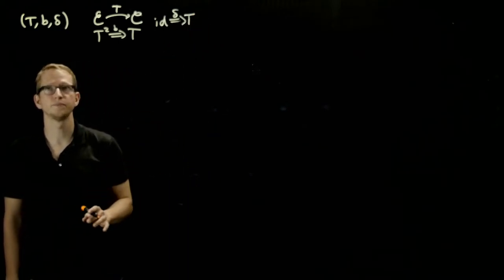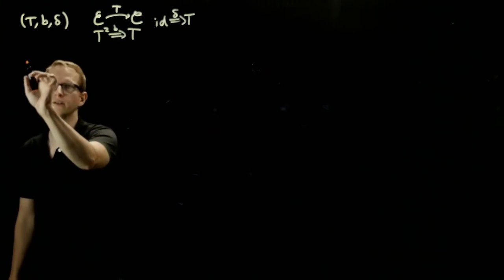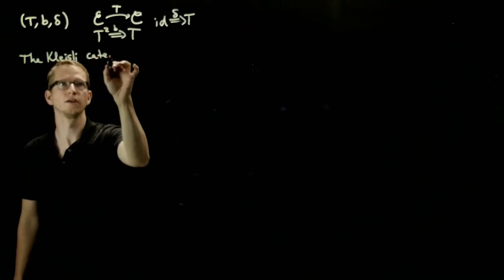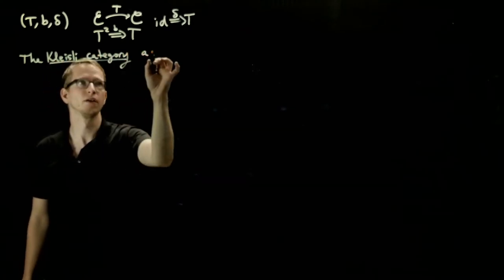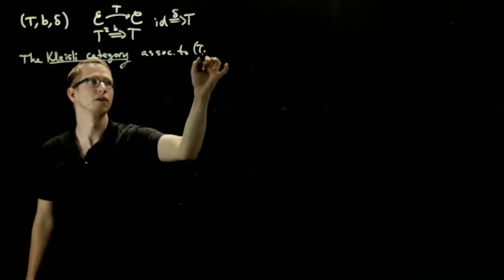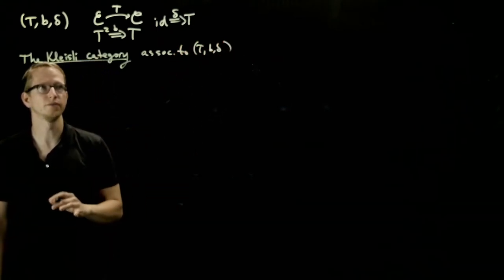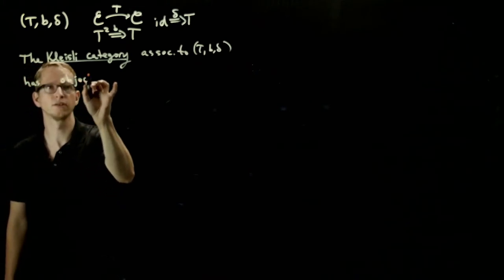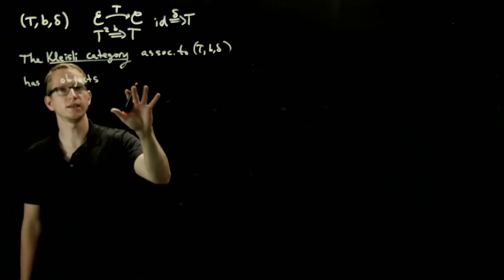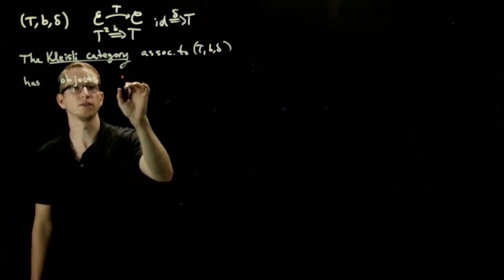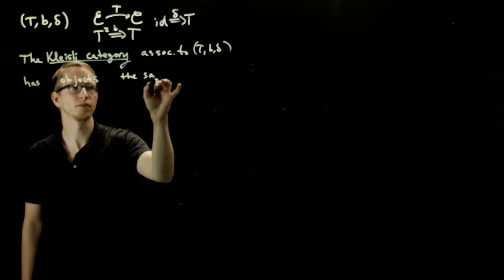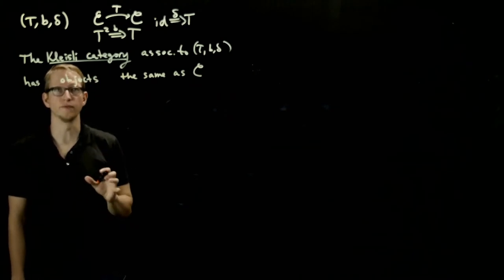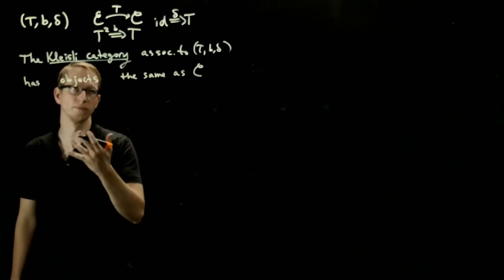So given all these data, we can construct the category associated to it. This category has the following objects. The objects are exactly the same as the objects of C. But the thing that changes is the morphisms, the class of morphisms.